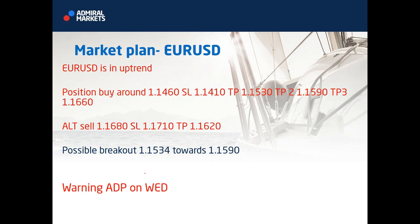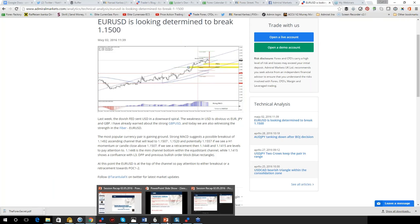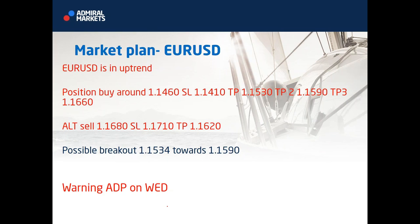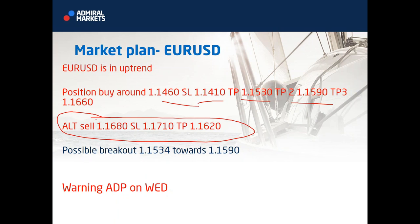EURUSD: today we had a very good trade, so it's a bit awkward to make another setup. But this is what price action is giving. Buy at 1.4600, stop loss at 1.4110, first target 1.5300, second target 1.5900, third target 1.6600. I would look to sell around 1.6800. If we see a breakout of 1.5340, I think 1.5600 and 1.5900 can be reached. Be warned: there will be ADP on Wednesday, so be very cautious.